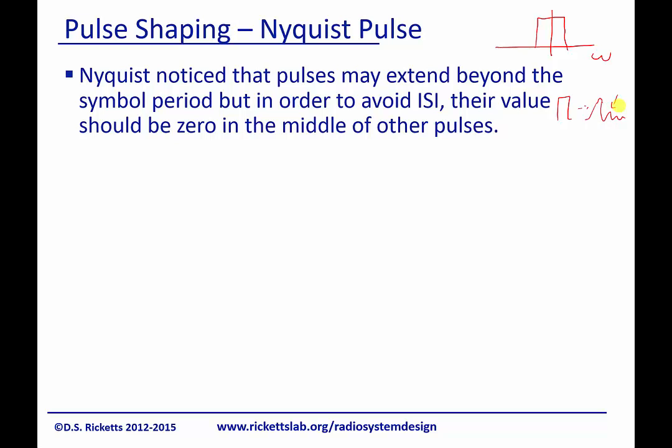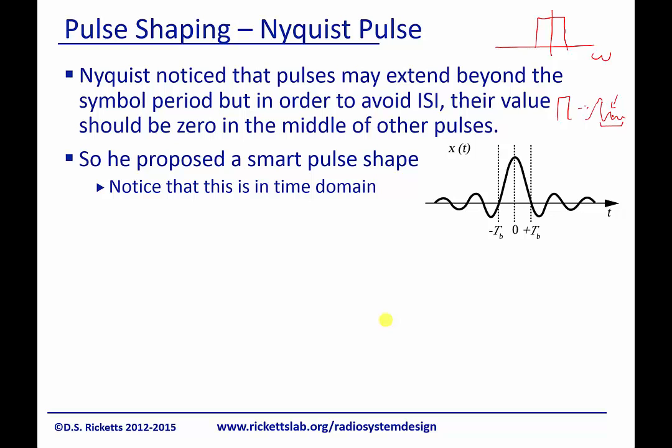And the insight he had was, well, maybe this isn't so bad if this is exactly zero, exactly zero when our next pulse is. And so, what he did is he proposed a smart pulse shape. And what he basically said was, first of all, notice this plot is in the time domain.